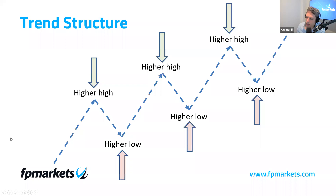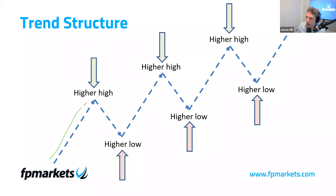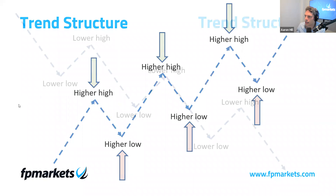Before we get into the specifics, I want to briefly go over the structure of a trend for any newer traders. An uptrend consists of a series of higher lows and higher highs. We begin with an up move, then retrace to form a higher low, then break the previous high to form another higher high, and this continues. The uptrend ends when price eventually breaks below the higher low, at which point we have what's known as a downtrend.